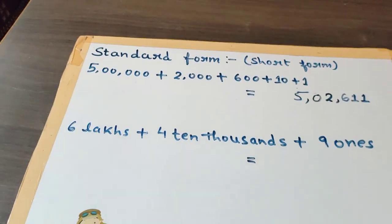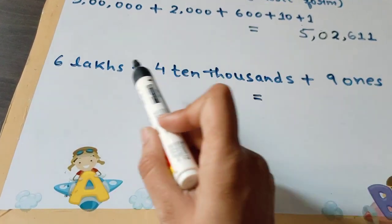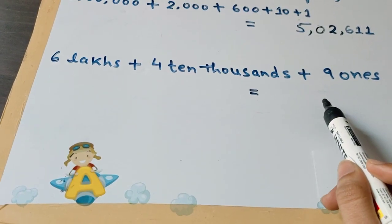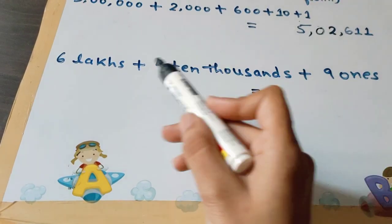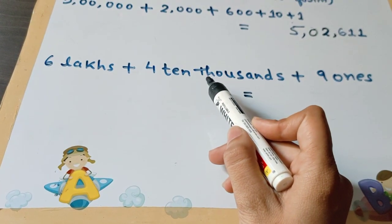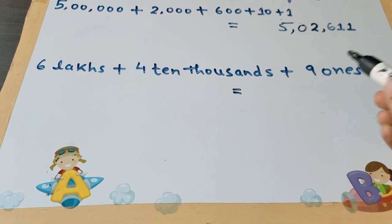Now coming to the second example. This is also called expanded notation, and we have to write this expanded notation in short form or standard form. The number is 6 lakhs + 4 ten-thousands + 9 ones. Starting with the 9.